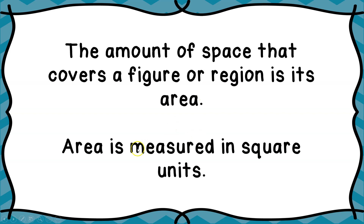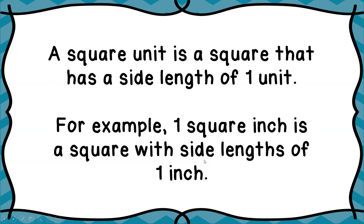Area is measured in square units, and that unit can change — it can be inches, feet, miles, or whatever — but you always have to have the word 'square' in it. A square unit is a square that has a side length of one unit. For example, one square inch is a square where all four of its sides measure one inch.